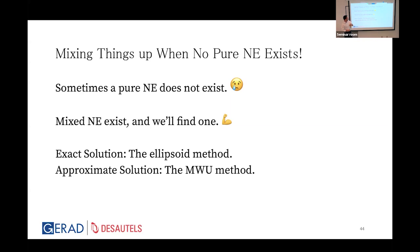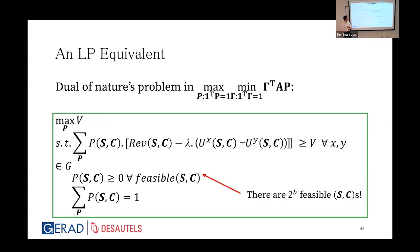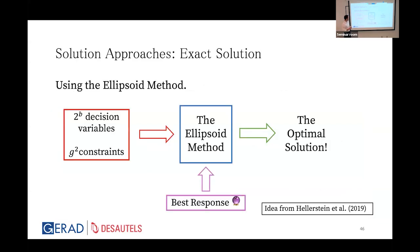We rewrite the problem by dualizing Nature's side: maximize V such that for each (x,y) pair the constraint is satisfied — this yields only G² constraints. The challenge is on the decision-variable side: there are 2^B feasible assortments, meaning 2^B decision variables. The ellipsoid method can handle this since it loves exponentially many variables with limited constraints, using our best response oracle as the separation oracle. However, nobody uses the ellipsoid method in practice — it's polynomial but extremely slow.